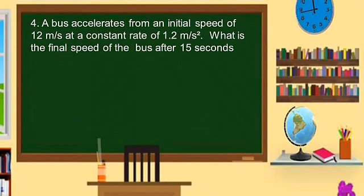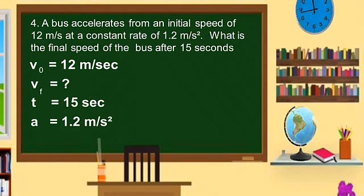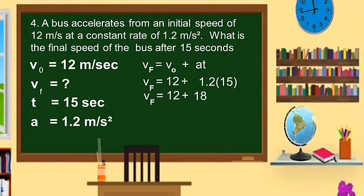Number 4. A bus accelerates from an initial speed of 12 meters per second at a constant rate of 1.2 meters per second squared. What is the final speed of the bus after 15 seconds? Initial velocity is 12 meters per second, final velocity is unknown, time is 15 seconds, and acceleration is 1.2 meters per second squared. Using the same formula — final velocity equals initial velocity plus A times T — we have 12 plus 1.2 times 15, which is 12 plus 18, equal to 30 meters per second.